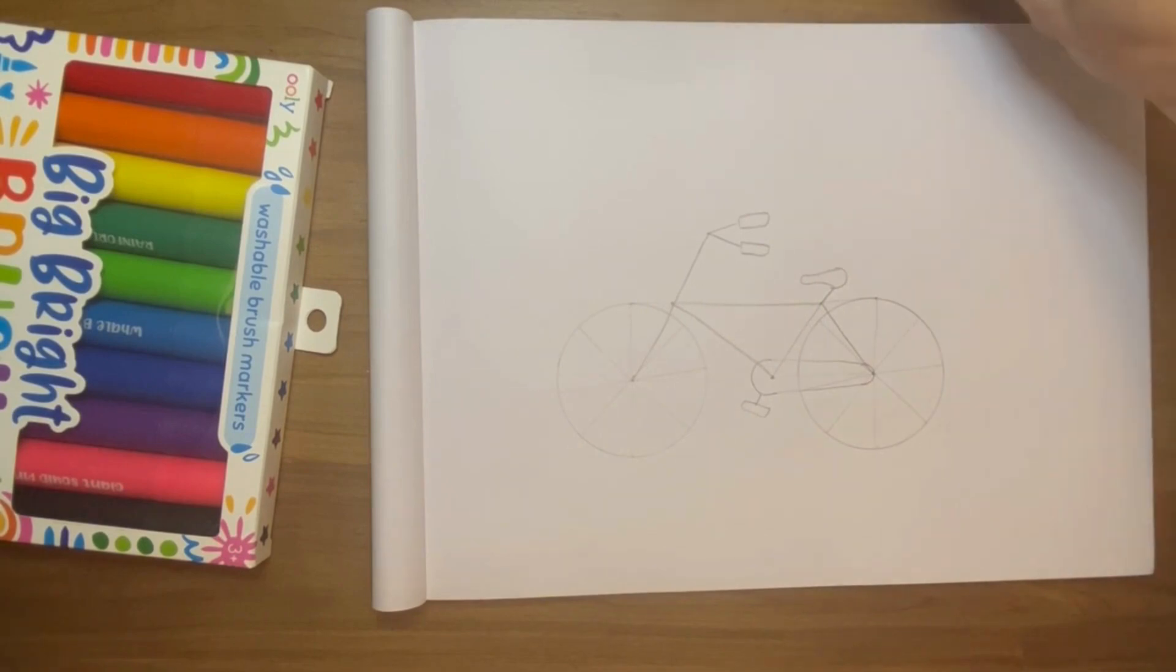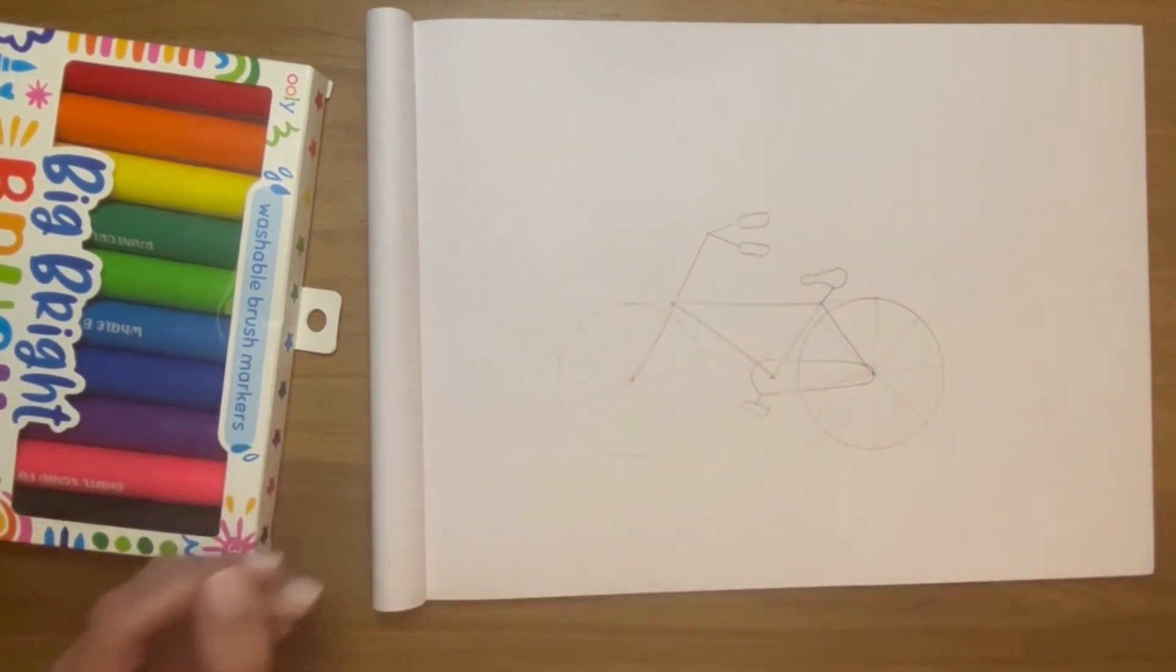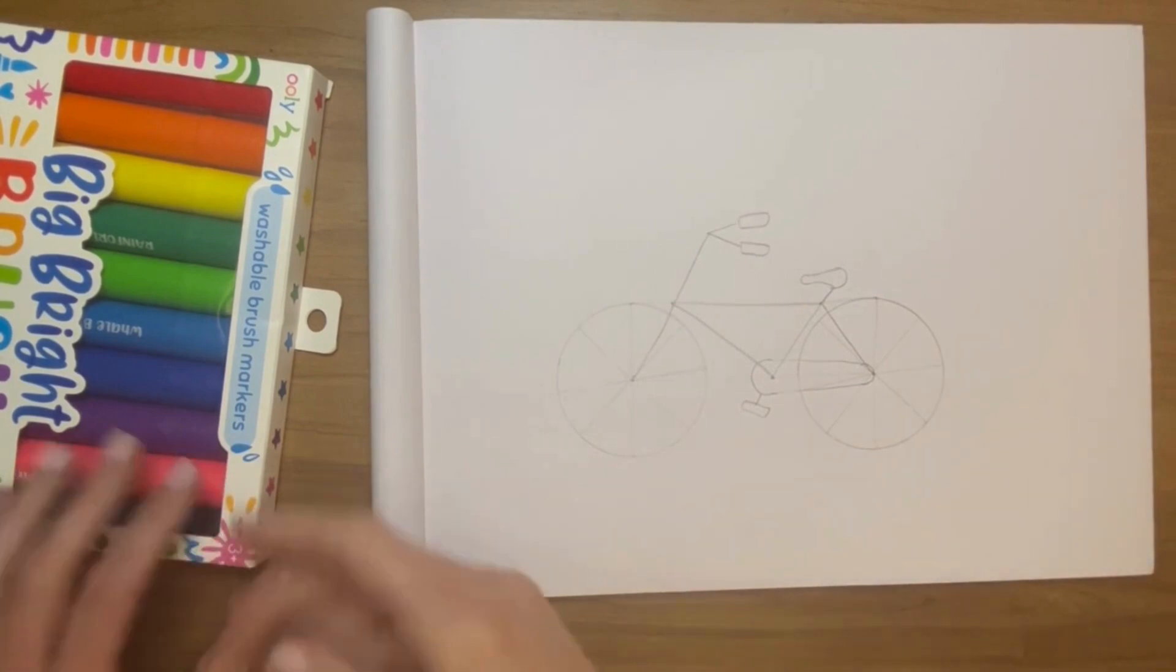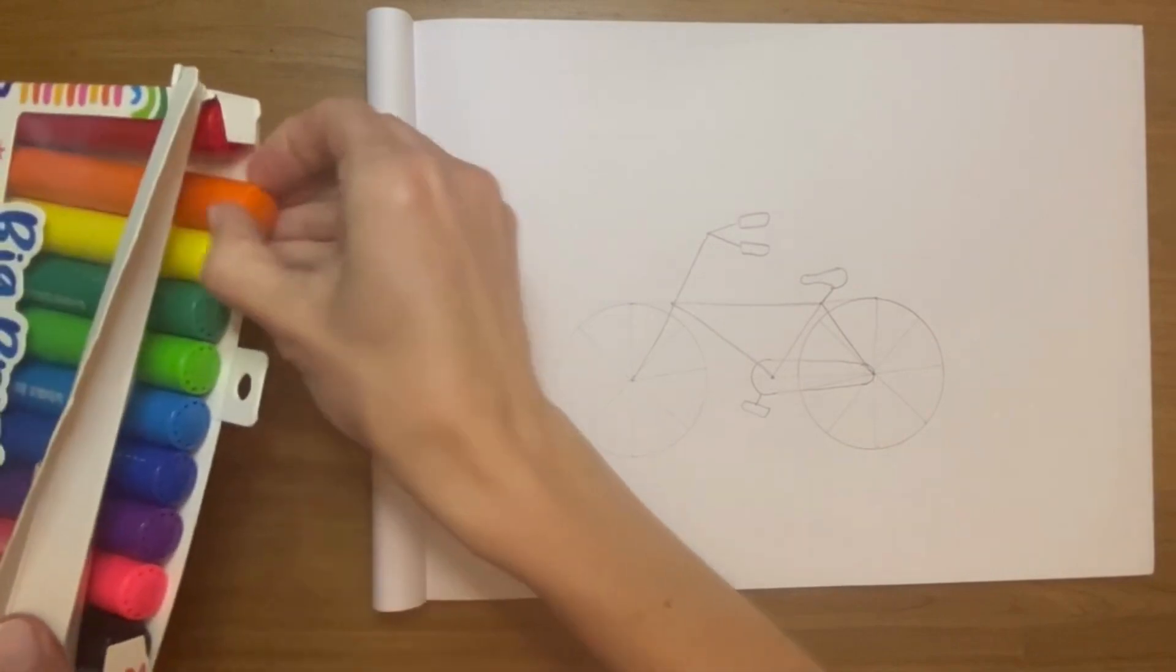So now we have the outline of the bike. What do you think? Did it come out for you? Remember, you can always use a ruler if you want to, if you feel more comfortable making the lines. So now I'm going to get an orange marker for the bicycle frame.